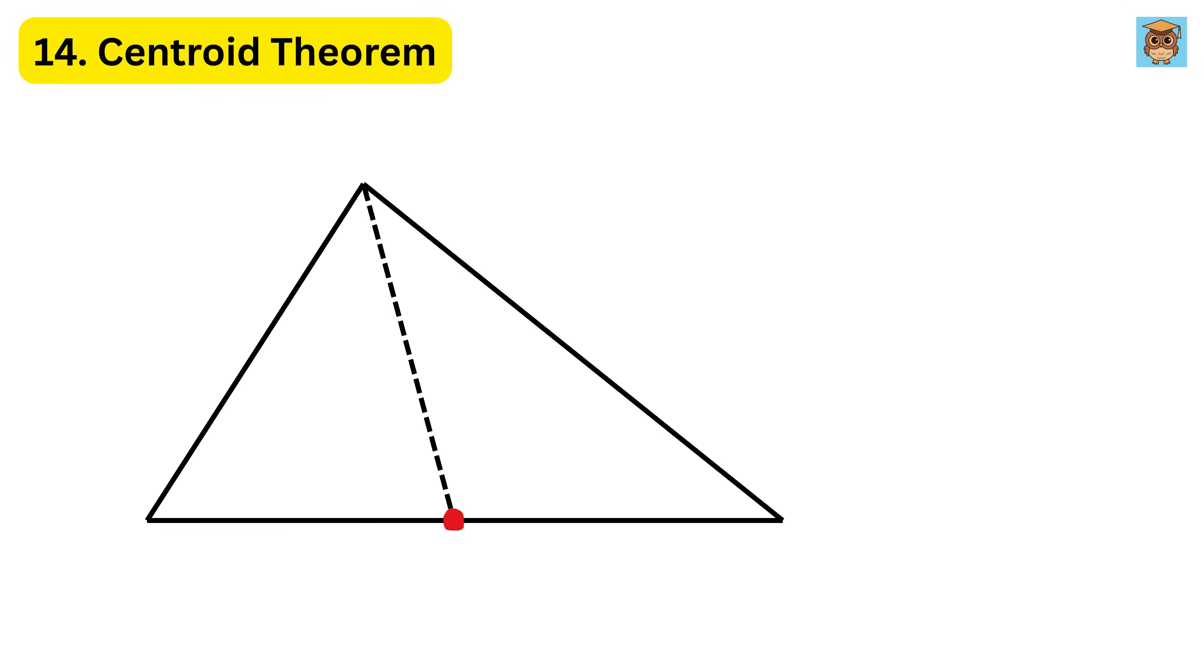14. Centroid Theorem. There is another cool part about medians. Now, if you draw all three medians in a triangle, all three medians of a triangle will always intersect at a single point. This special point is called the centroid of the triangle. The centroid is the triangle's center of balance, meaning if you cut out the triangle from a solid sheet and tried to balance it on the centroid, it would stay level.